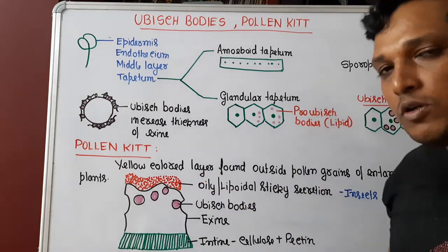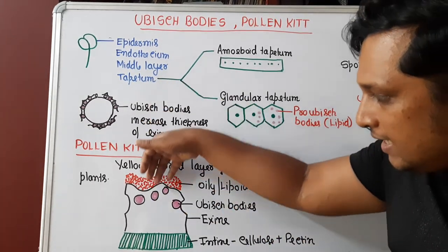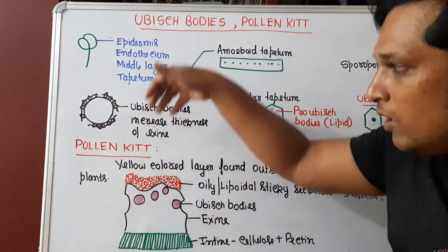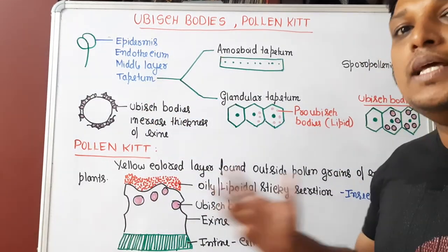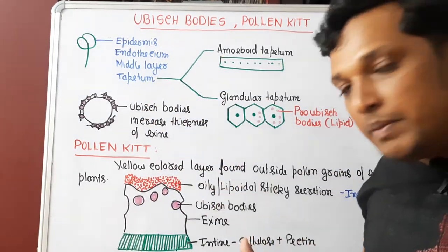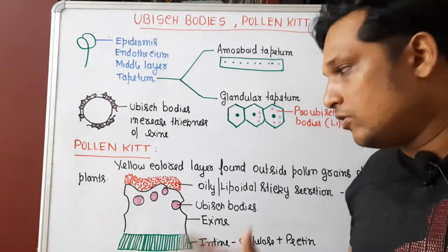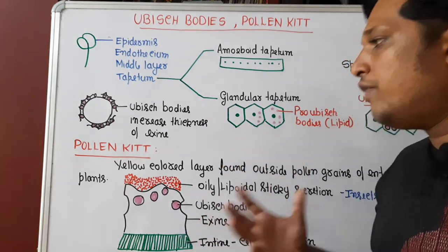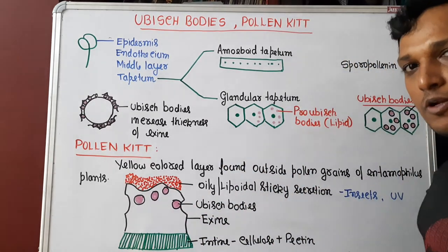Also, one more role of pollen kit is that it will protect the pollen grain from UV radiation, which can be damaging to the male gametes. Those are the two functions of pollen kit. So, that is about Ubisch bodies and pollen kit.